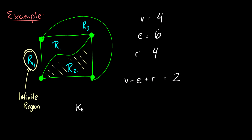The theorem says that the number of vertices, which is 4, minus the edges 6, plus the regions 4, is equal to 2. And 4 minus 6 plus 4 is equal to 2. So it works.